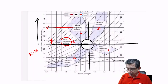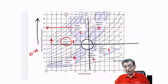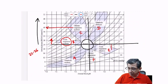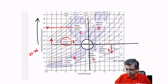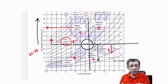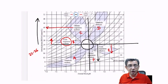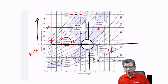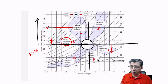Moving on to acute versus chronic respiratory alkalosis. The differentiating factor: in acute respiratory alkalosis, the fall in bicarbonate will be lesser in magnitude compared to the fall seen in chronic respiratory alkalosis. Using the same color scheme — black for chronic, red for acute — the magnitude of bicarbonate fall is much higher in chronic respiratory alkalosis. You can pick up these parameters from the diagram if the values are given to you, which is exactly what they test in the exam.